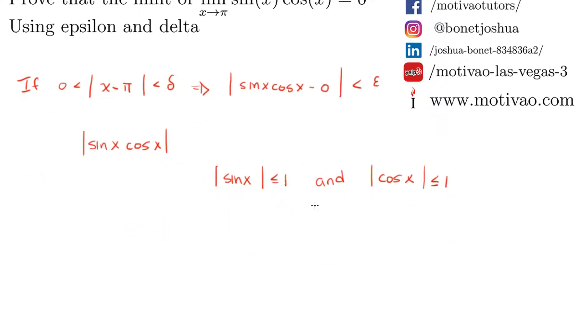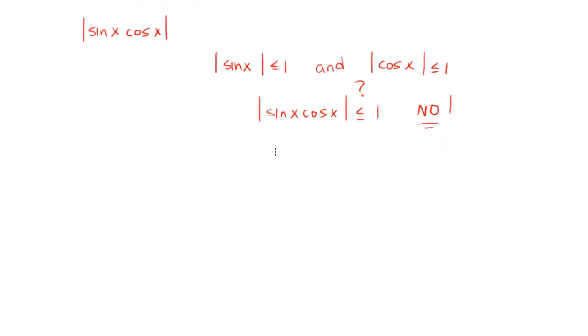Therefore, can we say that the multiplication is less than or equal than 1? The answer is no. Inequalities do not preserve multiplication. So, what would be a correct bound for sine of x times cosine of x?